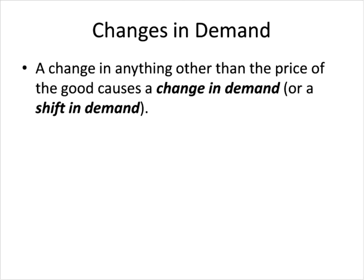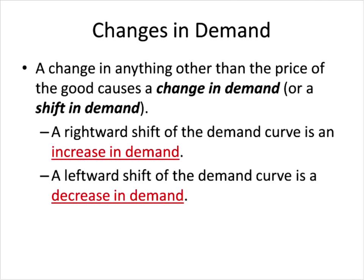The answer is that there must be something else other than a change in price going on. That brings us to the concept of a change in demand, or a shift in demand. When something other than the price changes, it causes us to shift to a different demand curve. When our demand curve shifts to the right, we call this an increase in demand, and when it shifts to the left, we call this a decrease in demand. Remember, a change in price causes a change in quantity demanded, which is totally different than a change in demand.